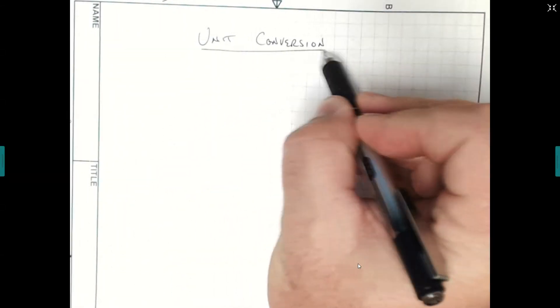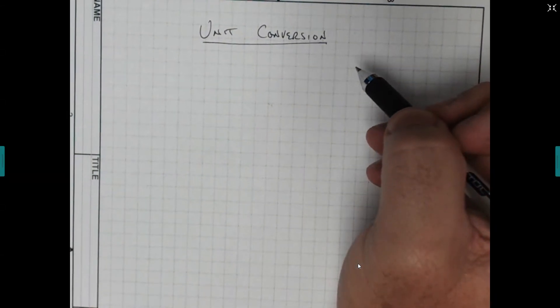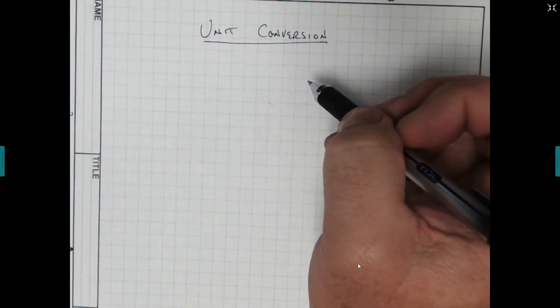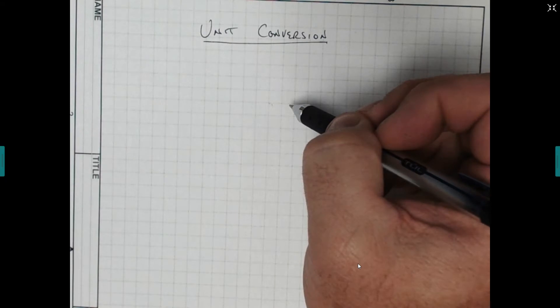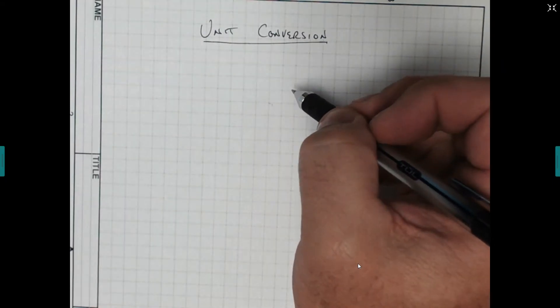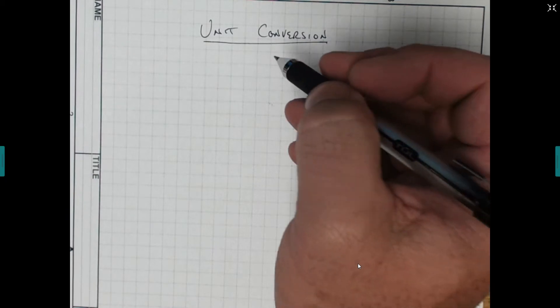Alright, for this video we're going to talk about unit conversion. A lot of times as an engineer, in engineering class, we have to convert from one unit to another, whether it's from one metric unit to another metric unit, from metric to English, or from one English to another. Either way, it's converting from one thing to another.